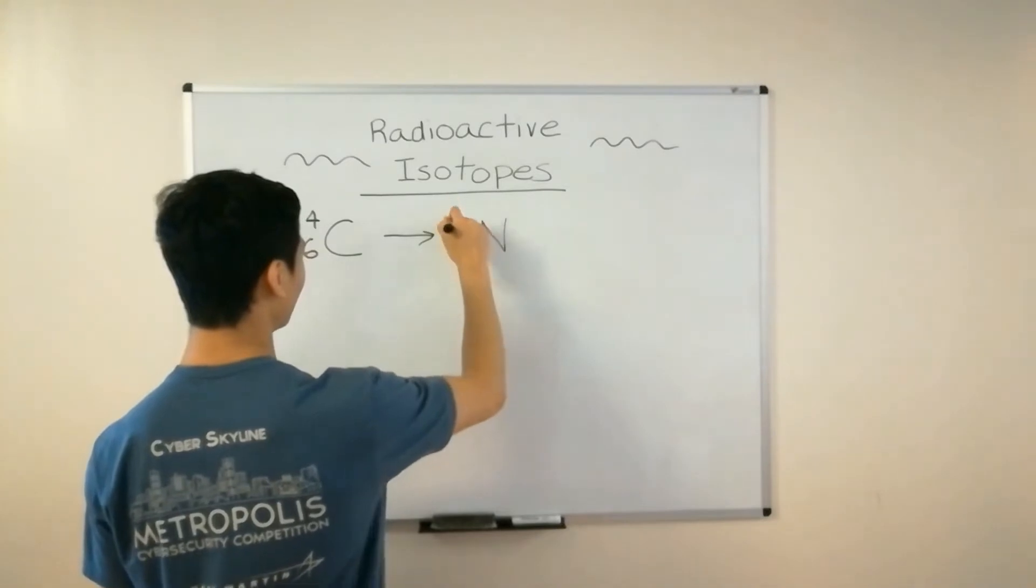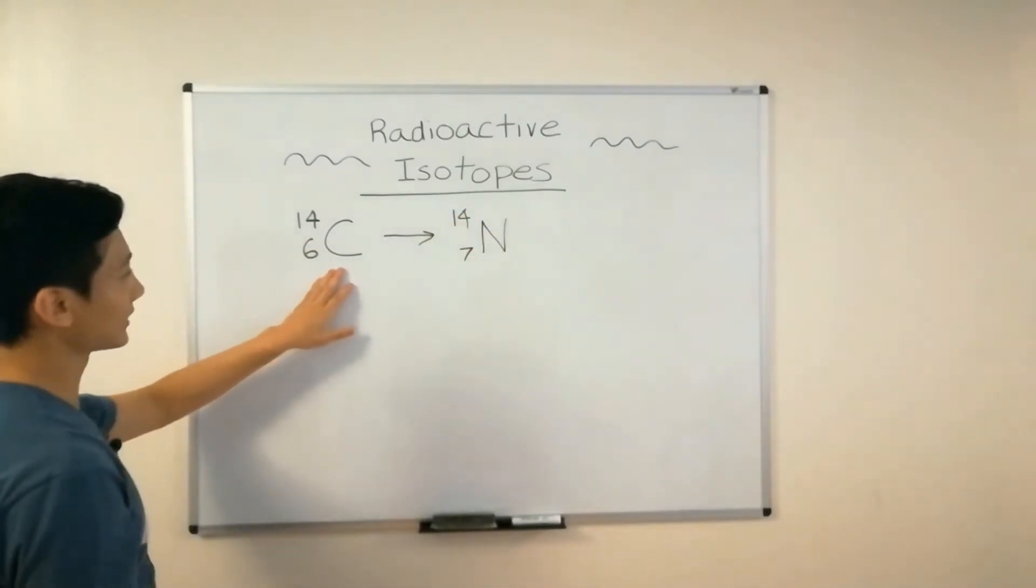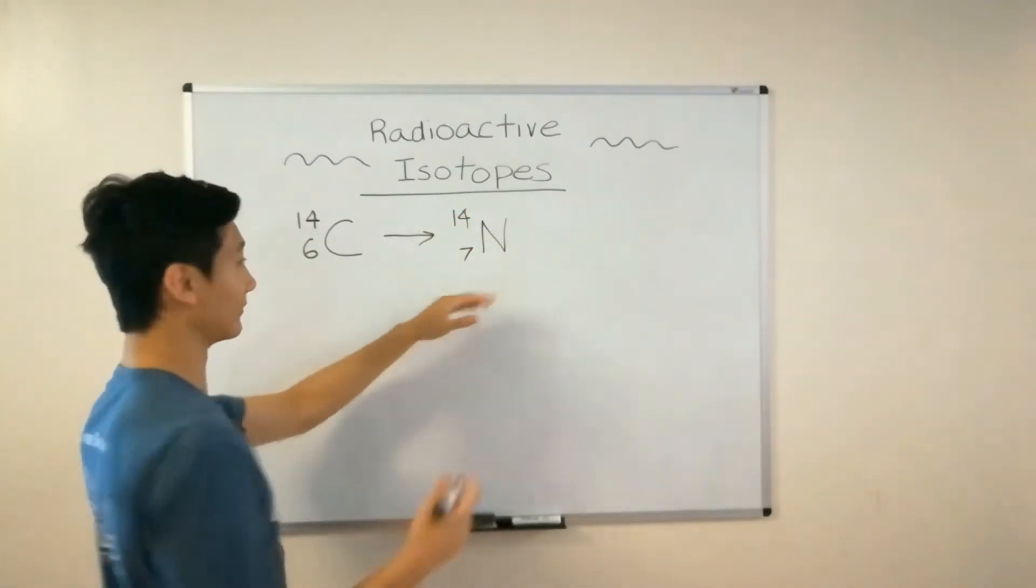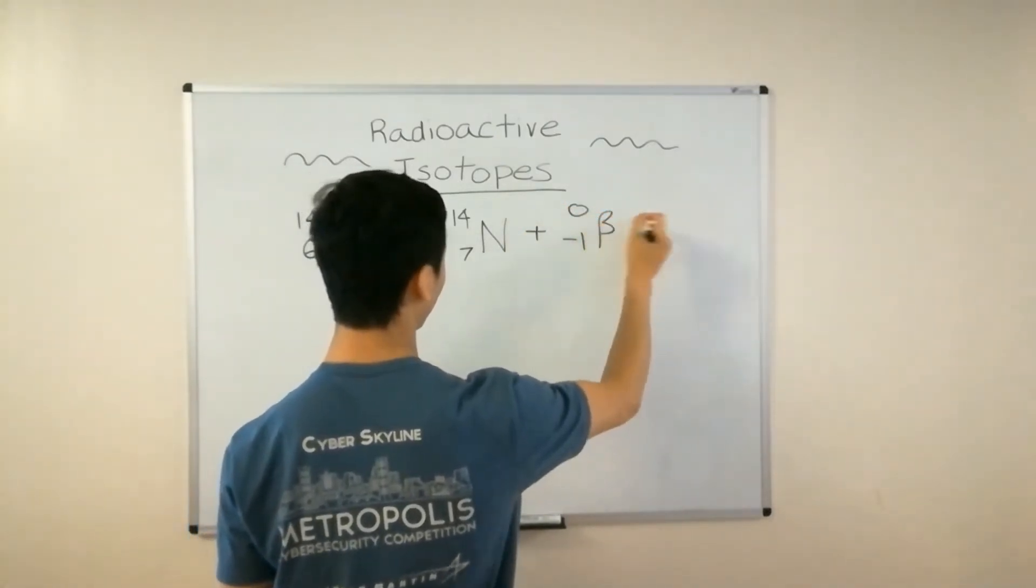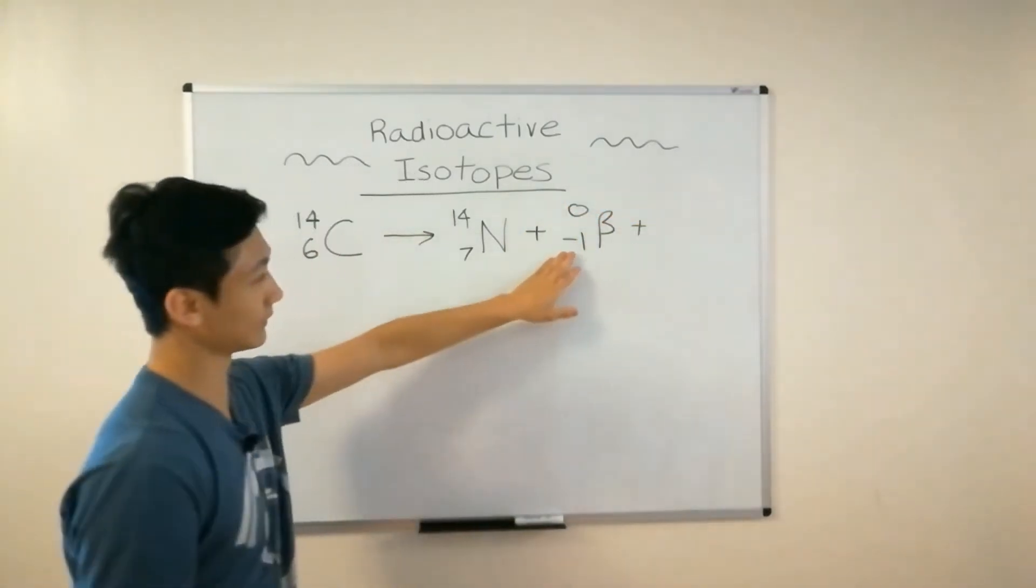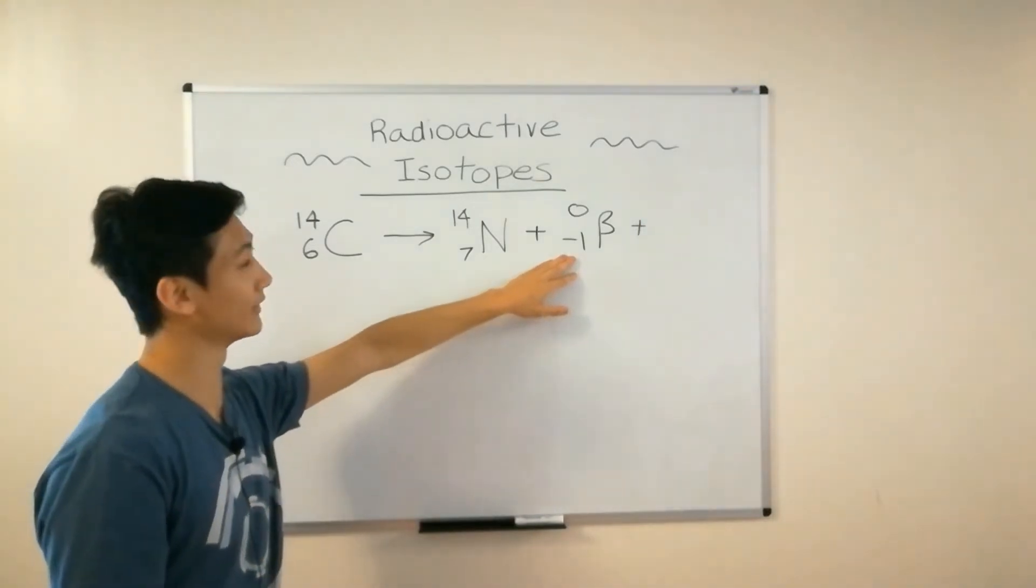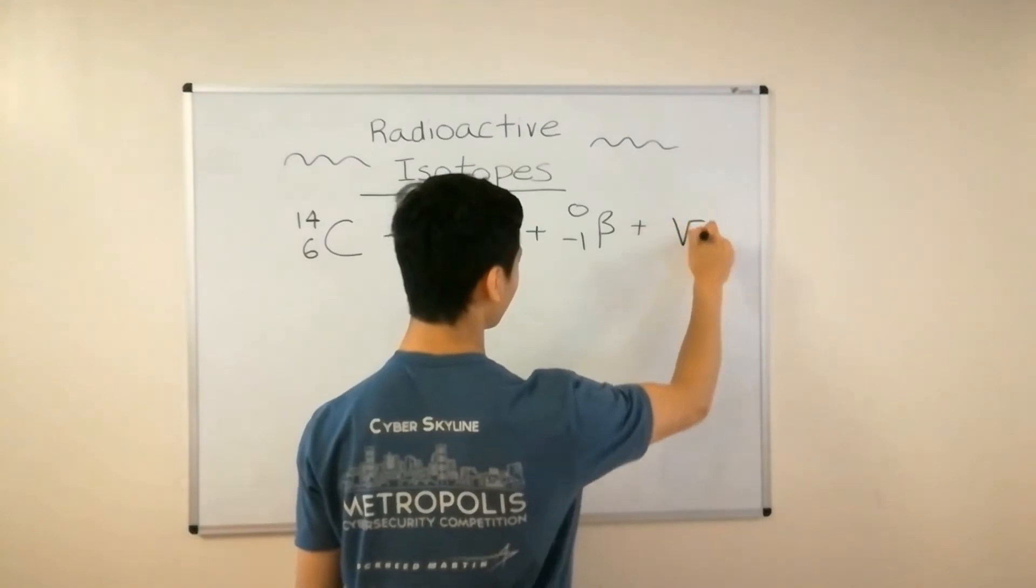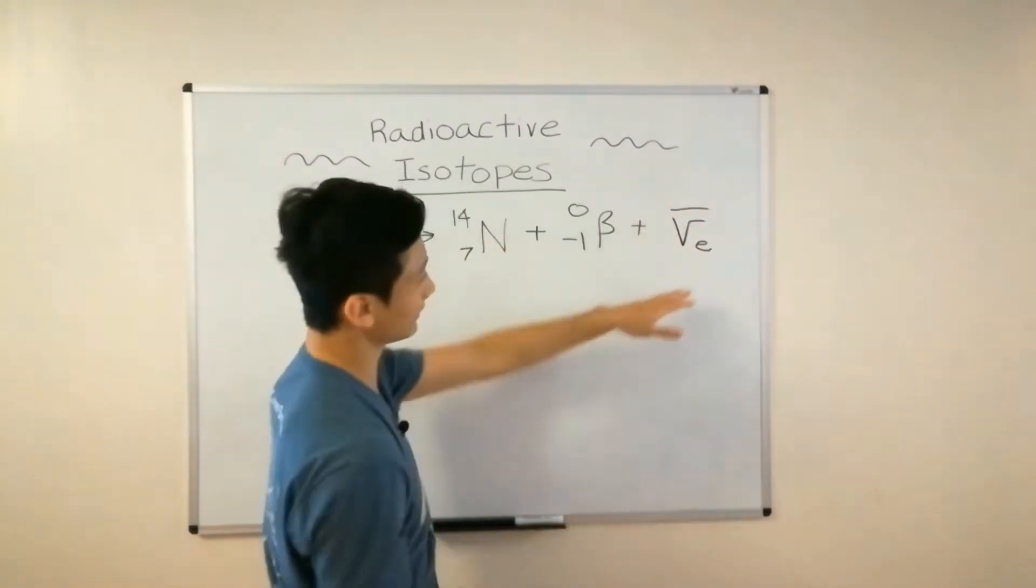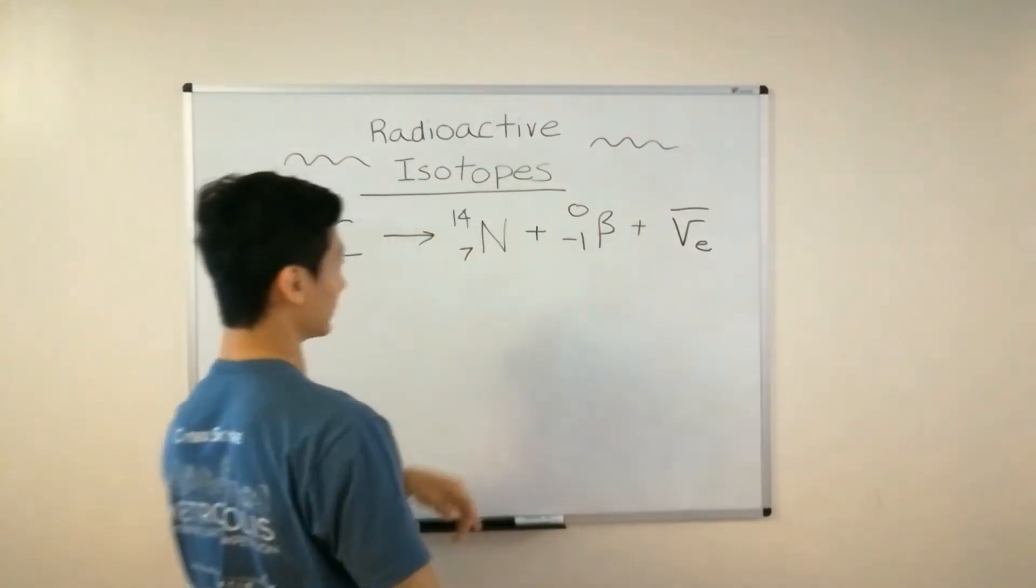But essentially, this carbon atom is actually converted into a nitrogen atom, releasing something called a beta particle. I mean, this is really just an electron. And if you want to be complete about it, you can also say that it releases an anti-neutrino, specifically the electron anti-neutrino, to preserve electron number.